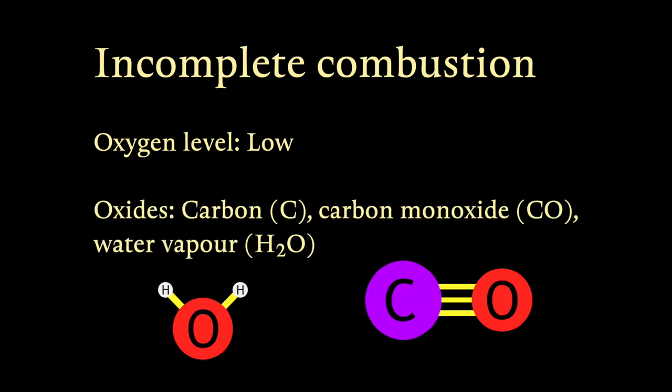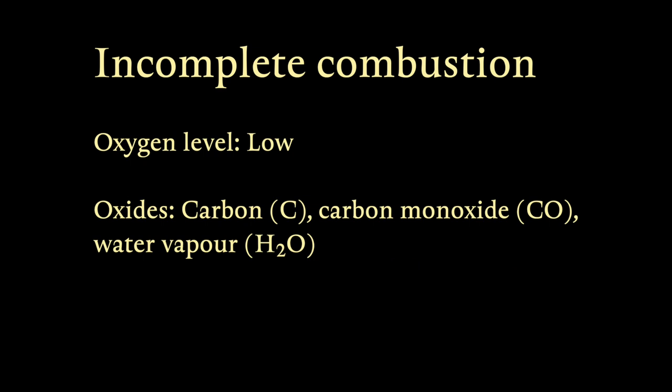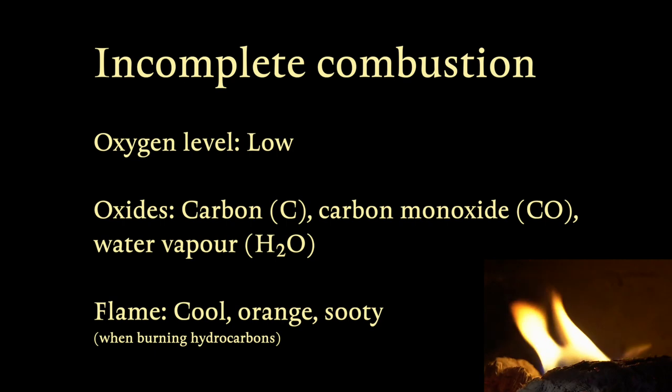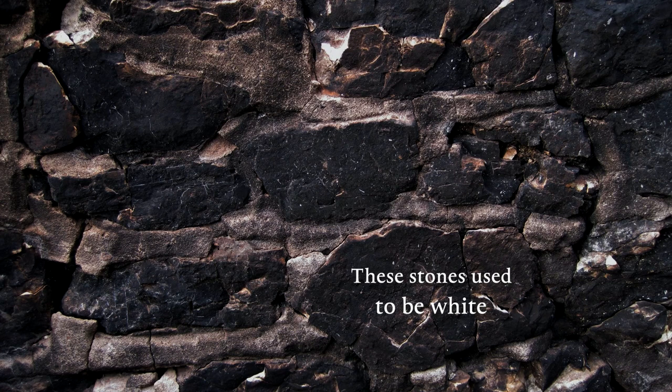By contrast, incomplete combustion occurs when the oxygen supply is limited. It still produces some amount of water vapor, but instead of carbon dioxide, we observe some carbon monoxide or solid carbon in the form of soot. These substances contain less oxygen, because there was less available to react with in the first place. Incomplete combustion progresses with an orange flame, which is cooler than a blue flame, and gives off smoke and black soot.